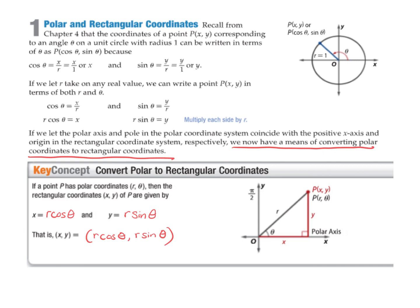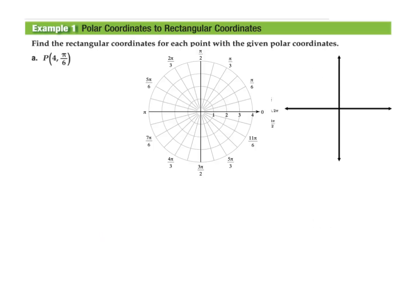All of the values we're going to be looking at correspond with values on your unit circle, so knowing those basics about the 45-45-90 and 30-60-90 triangles will be helpful to get exact answers. Let's go ahead and try example one. We're given the point (4, π/6), so r is 4 and theta is π/6, and we want to find the rectangular coordinates.